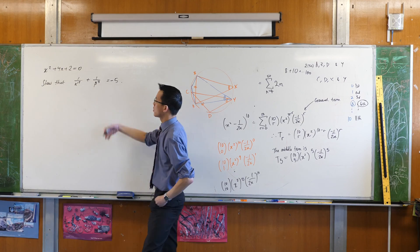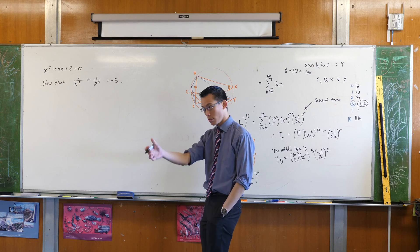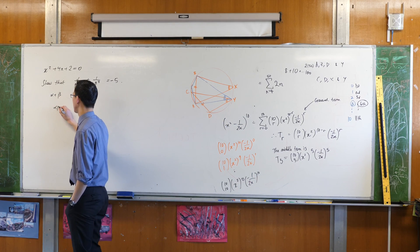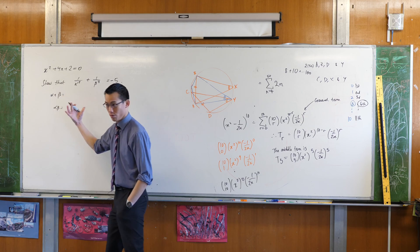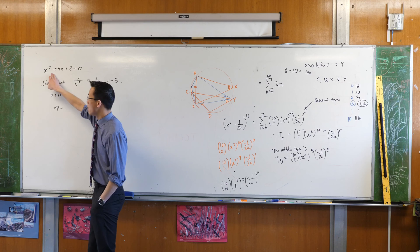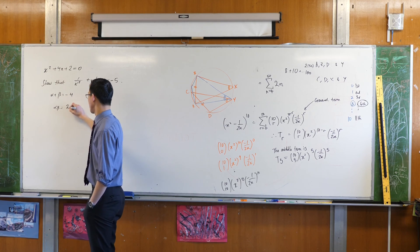The first thing is whenever you see one of these alpha beta questions, pretty much out of instinct, even if they don't tell you to, you should work out what the sum and the product are. Just do that because you're going to need to use those building blocks. In this case, alpha plus beta will be minus b on a, so it's just negative 4, and this one will be c on a, which is just 2.